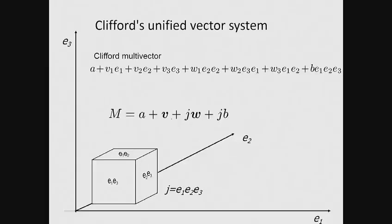Using bold symbols V and W to represent three component vectors, we can produce a more compact form for the multi-vector, as shown. Now, as we required, the subalgebra, a plus JW, is actually isomorphic to the Quaternions.